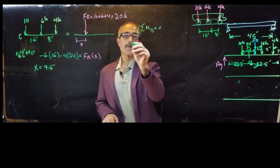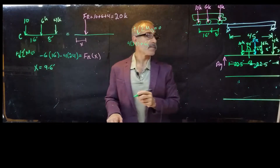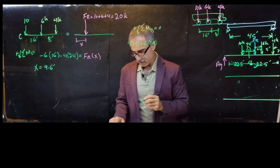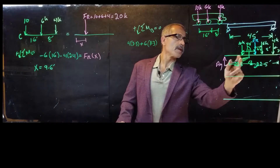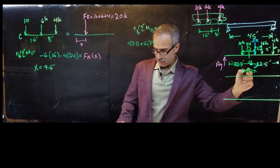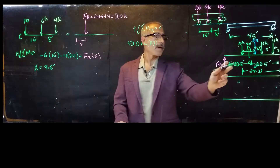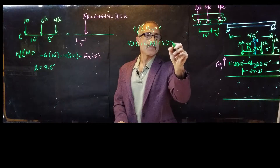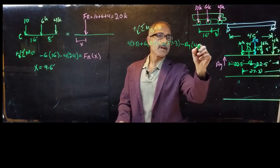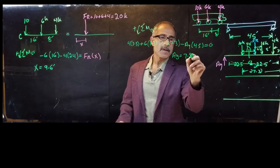Taking summation of moments about point B equals zero, counterclockwise positive: plus 4 times 3.3, plus 6 times 11.3, plus 10 times 27.3, minus Ay times 45 equals zero. Solving this, Ay comes out to 7.87 kips.